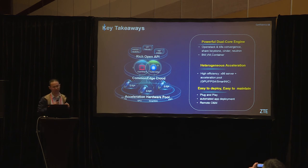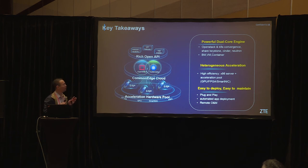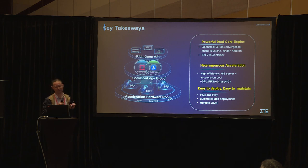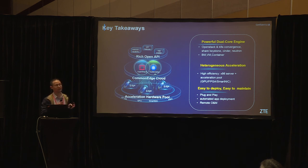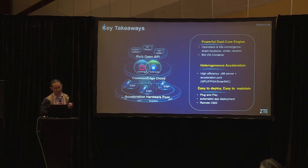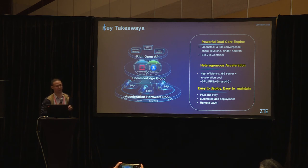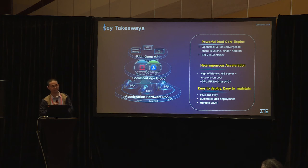In summary, the ZTE CommEdge solution provides three main features. First, a powerful dual cloud engine that brings OpenStack and Kubernetes together to share components and provide a unified cloud. Second, heterogeneous hardware acceleration support provided by ZTE's own acceleration cards or third-party hardware. Third, easy deployment for both MEC and applications, with centralized management from a central location — since you cannot always have skilled people at the far edge. Thank you.